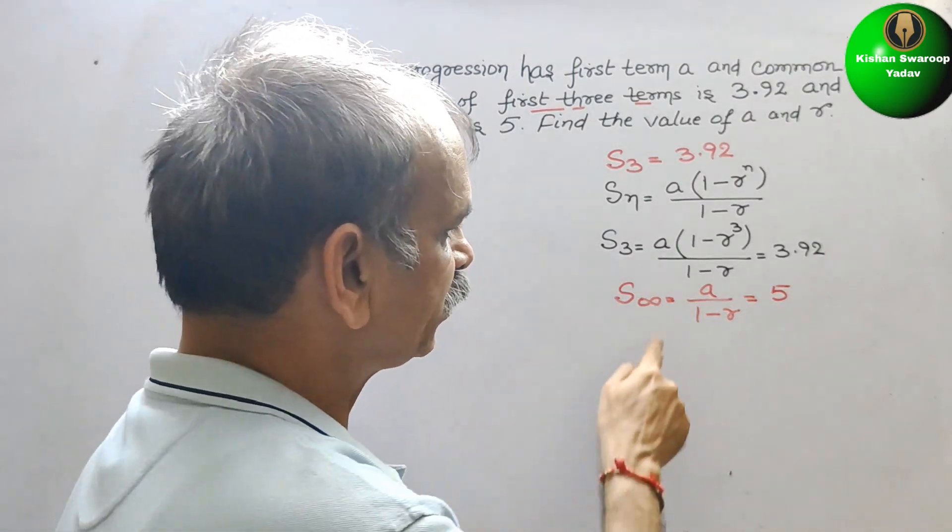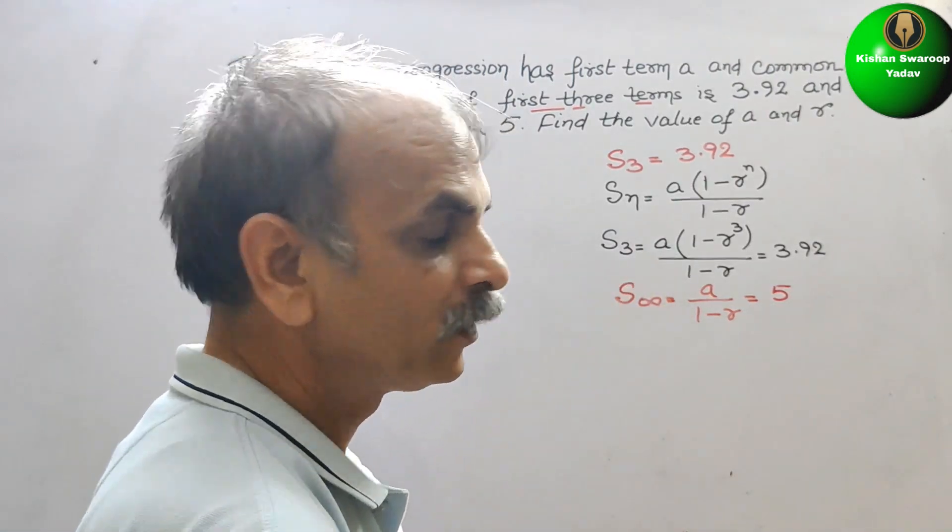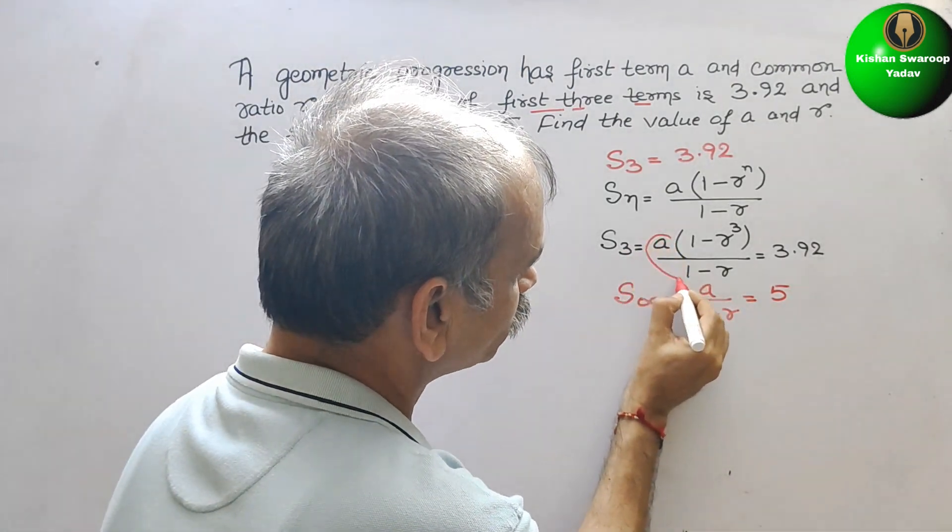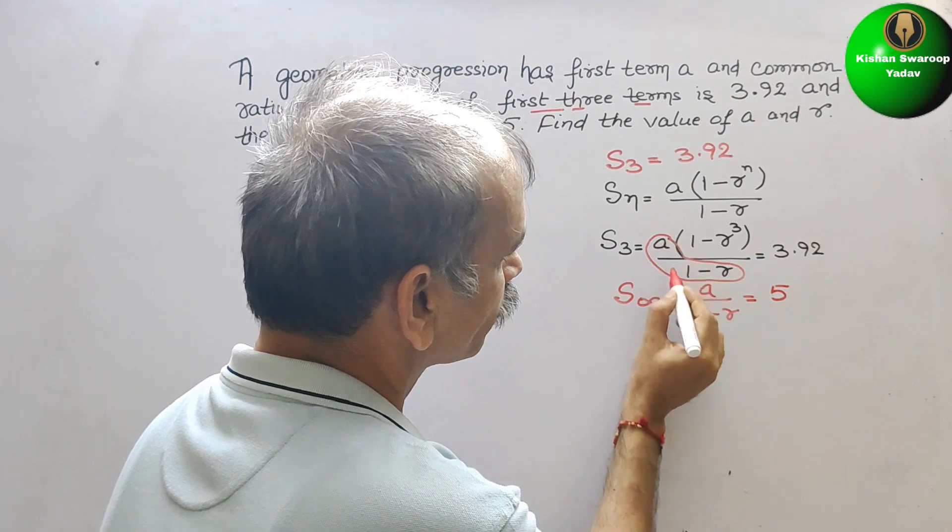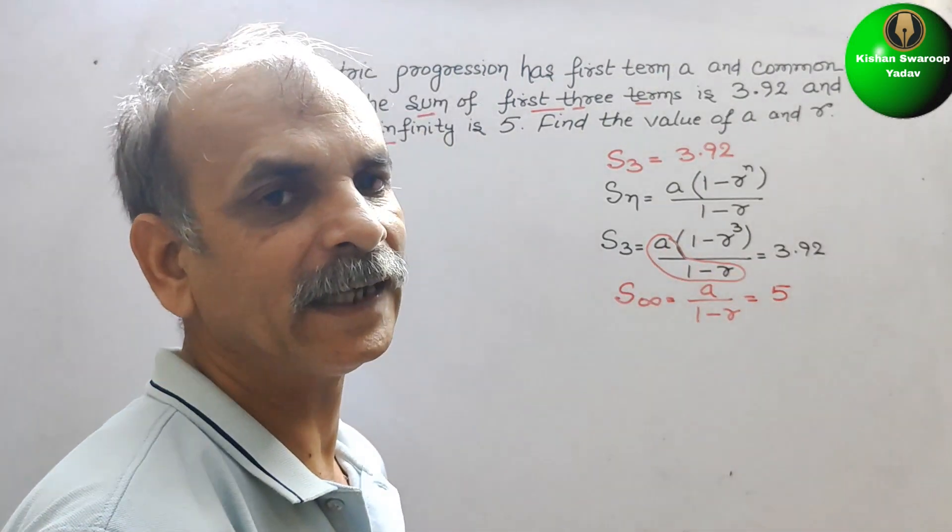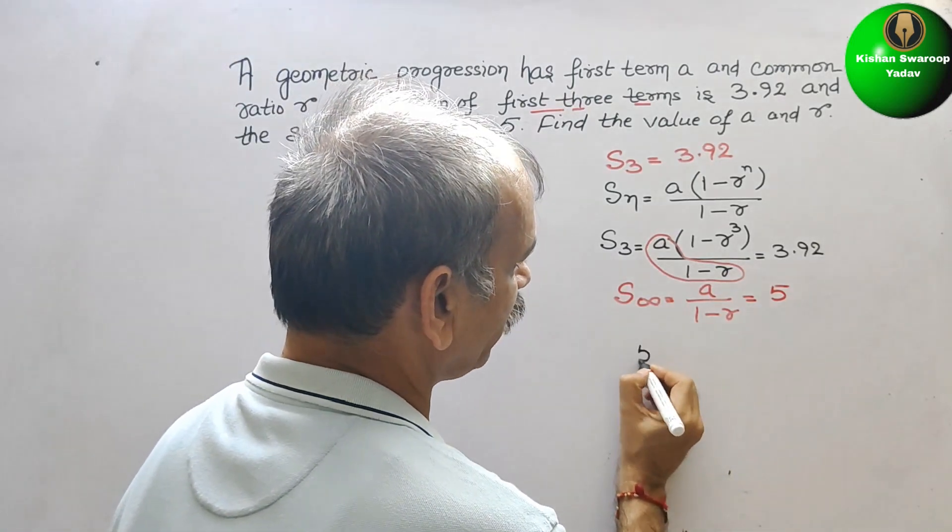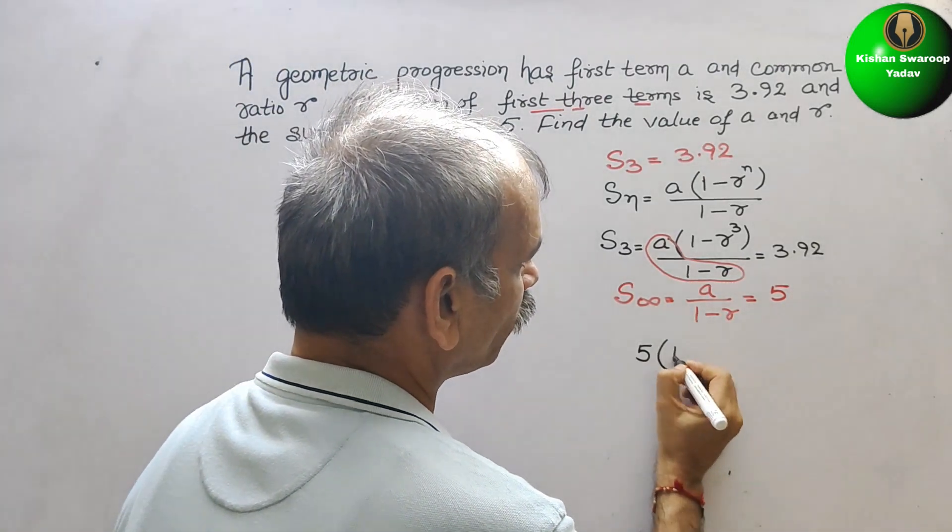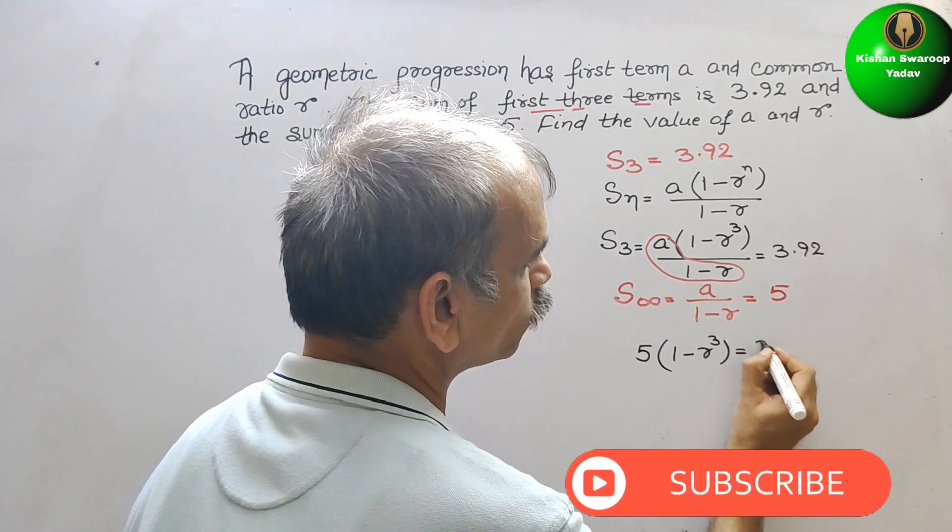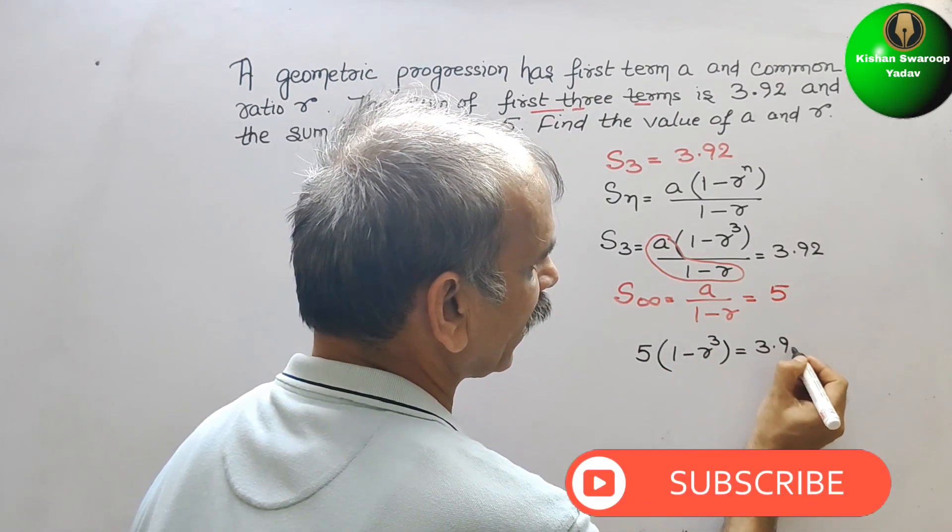Now if you see this, A by 1 minus R, this value is 5. So here we will write that. Now it will be 5 times 1 minus R cube is equal to 3.92.